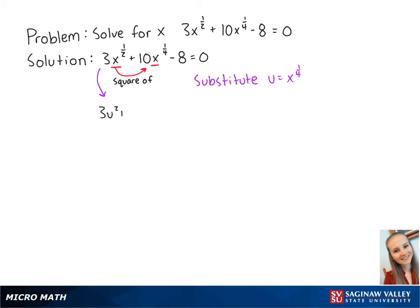So now we have 3u squared plus 10u minus 8 equals 0. This can factor out to be 3u minus 2 times u plus 4 equals 0.